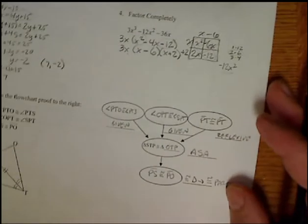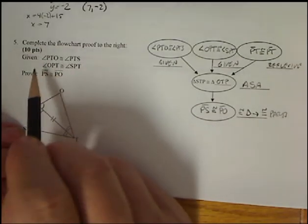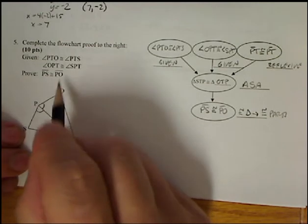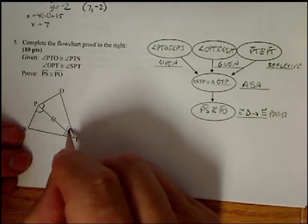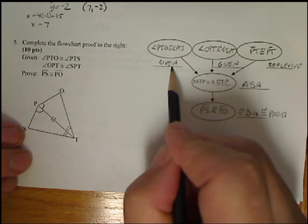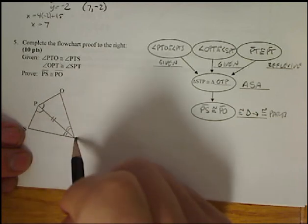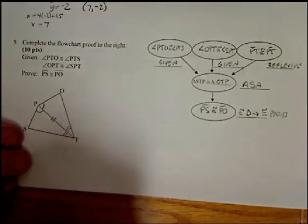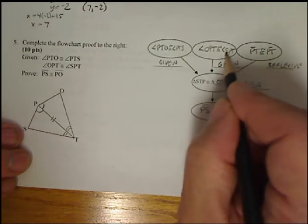Okay, our flowchart proof. First thing you want to do is see about marking up your figure. So angle PTO is congruent to angle PTS. So I marked those with double marks. Then I wrote it into the bubble. That was given. Then I did angle OPT is congruent to SPT. So SPT. Mark those with single arcs. Doesn't matter which way you want to mark them. That also was given. So I just put it into the box and wrote given.